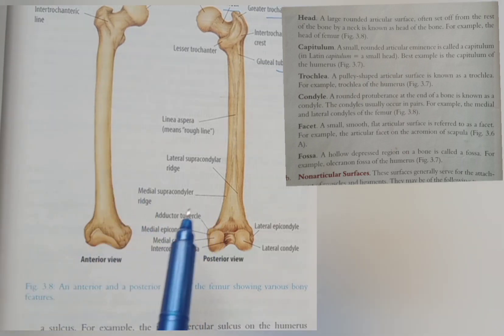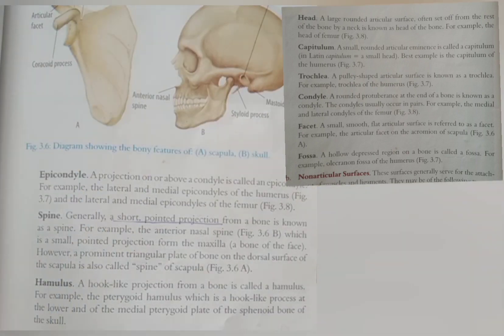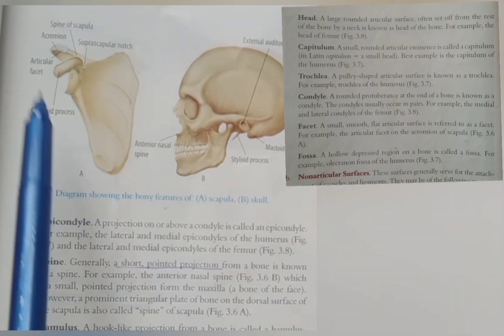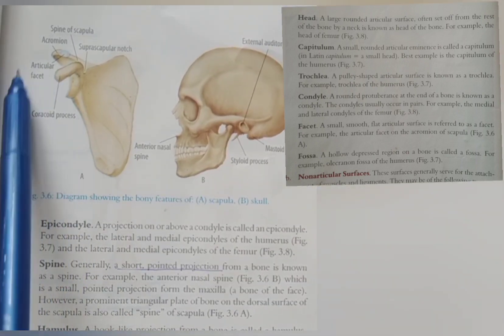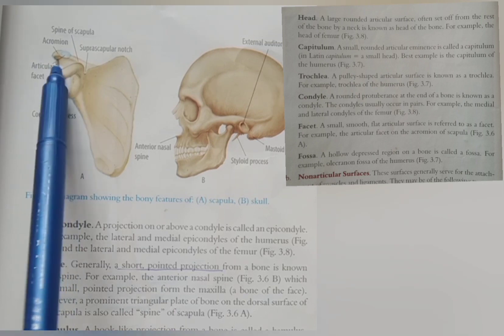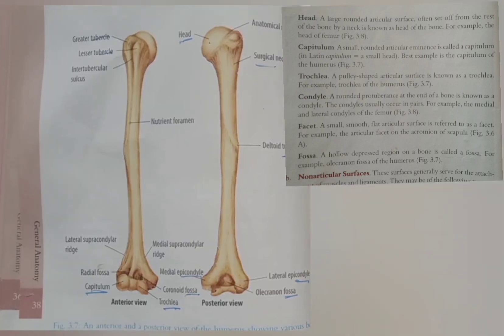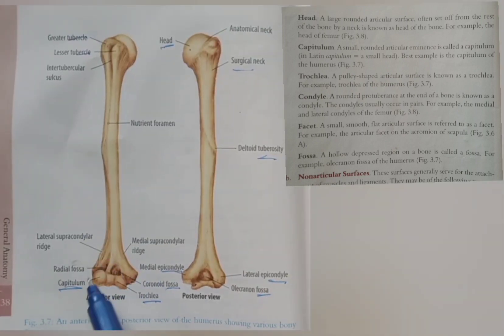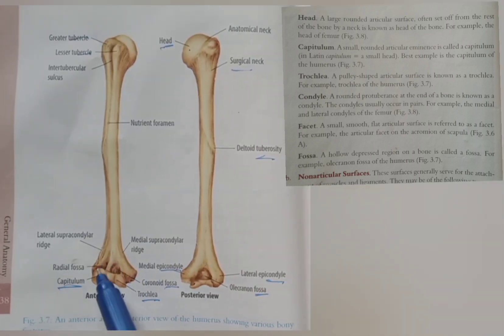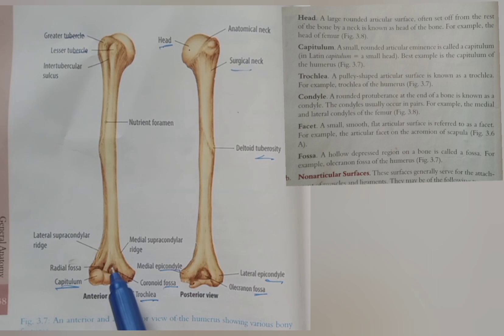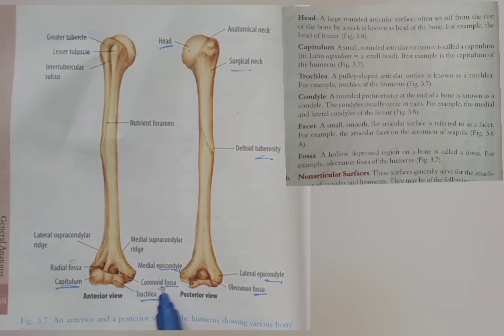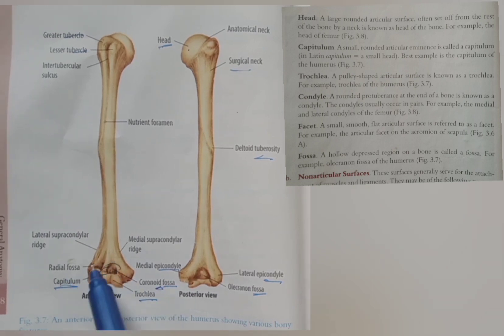Next, we have a facet. The facet is a small smooth surface. You can see the articular facet present with the scapula. The facet is a whole load depressed region — it is called a coronary fossa and radial fossa.